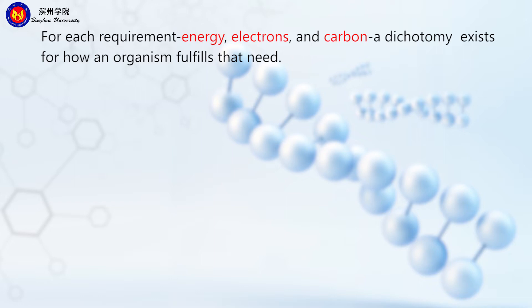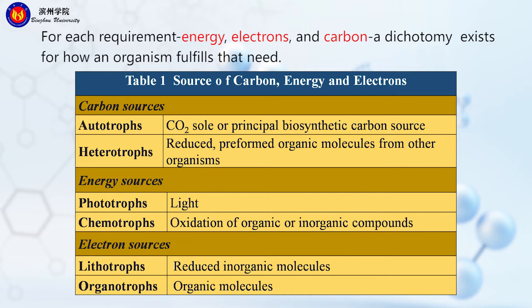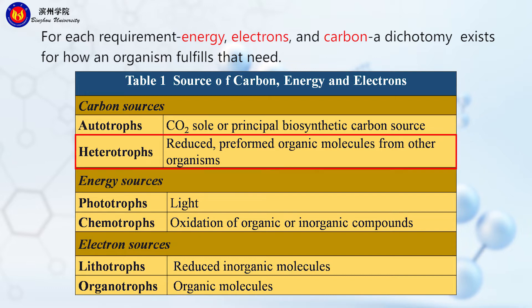For each requirement — energy, electrons, and carbon — a dichotomy exists for how an organism fulfills that need. Look at this table. There are three sources: carbon, energy, and electrons. According to the carbon sources, there are two kinds. The first is autotrophs — these microbes use carbon dioxide as their carbon source as their sole or principal biosynthetic carbon source. The second is heterotrophs — these microbes use reduced preformed organic molecules as their carbon source.